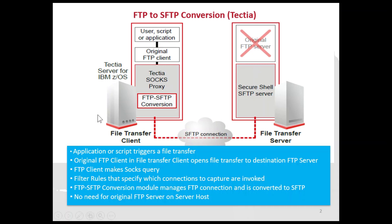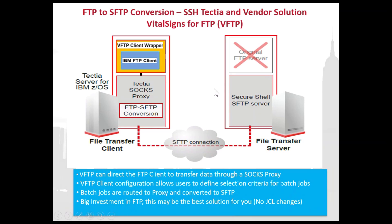Now let's talk about the second solution — the vendor solution. This uses SSH Tech Tier with Vital Signs for FTP, or VFTP as we commonly refer to it. The concept is very similar to the previous solution, with the exception that the VFTP client wraps around the standard IBM FTP client. This allows you to configure the VFTP client to route batch jobs to the proxy, so the VFTP client is being invoked as opposed to the IBM FTP client.